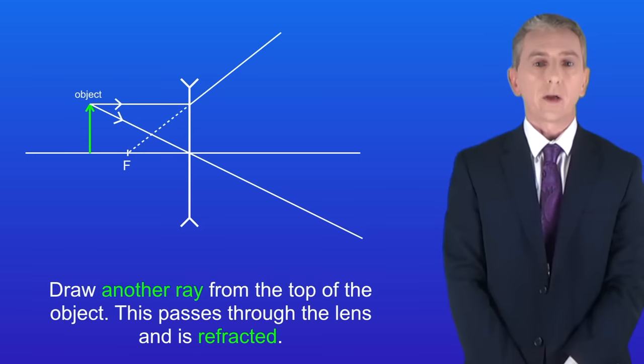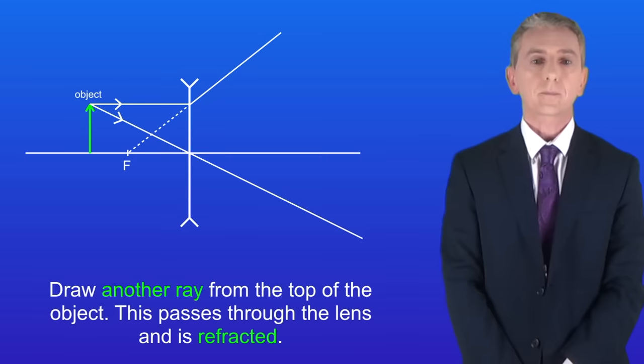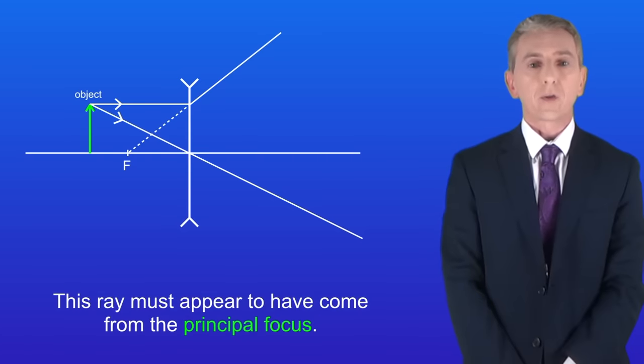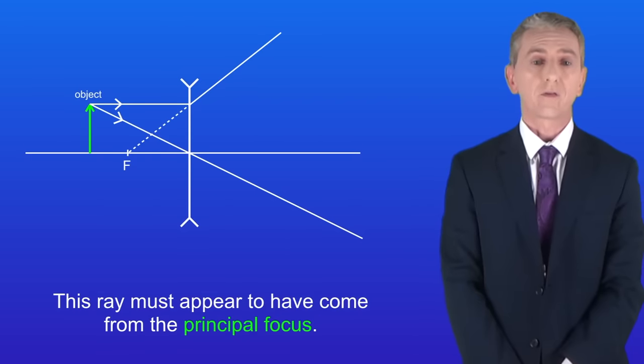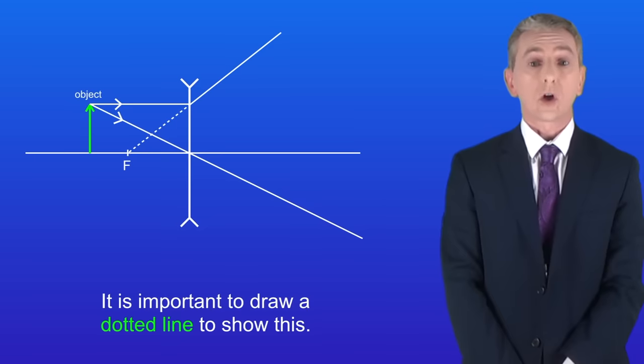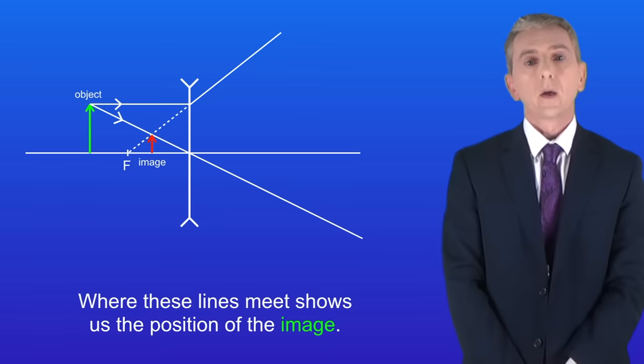Next we draw another ray from the top of the object. This passes through the lens, and it's refracted like this. Remember that this ray must appear to have come from the principal focus, so it's important to draw a dotted line to show this. Where these lines meet shows the position of the image.